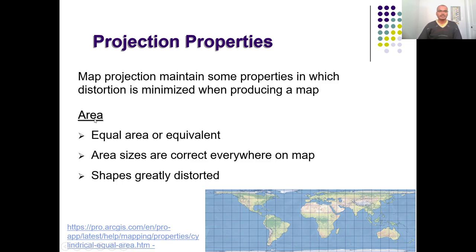Projections intended to represent area accurately are called equal area projections, where aerial calculations or representations are accurate. Looking at a cylindrical map projection covering the entire globe, the equatorial regions are represented accurately without much distortion and with equal area. But towards the poles, in order to maintain the property of area, the shape is highly distorted. You could not find the shape represented properly. However, this projection represents area equally across the entire surface.